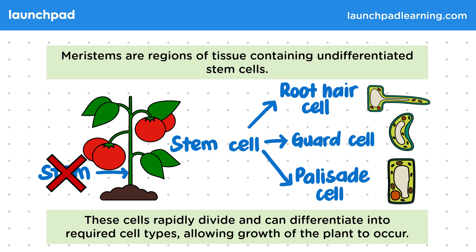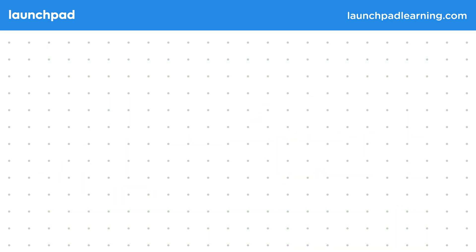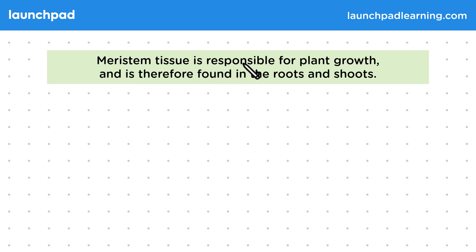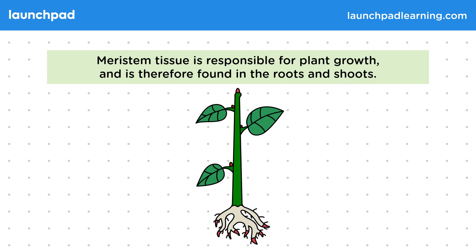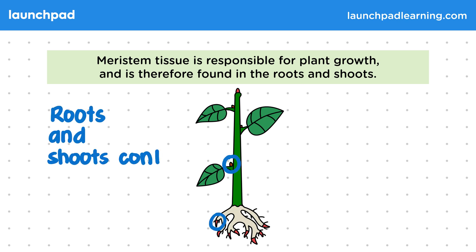So where is meristem tissue found? Meristem tissue is responsible for plant growth and is therefore found in the roots and shoots, because these are the areas that grow. On this diagram, you'll notice that there are some red areas — these are the areas that contain meristem cells, so the roots and the shoots.